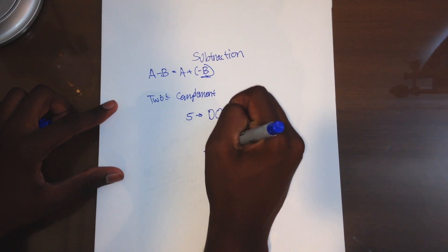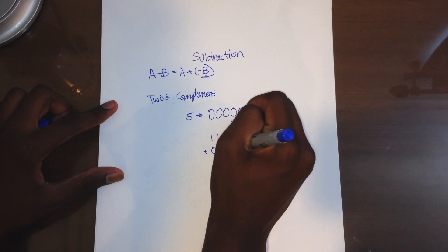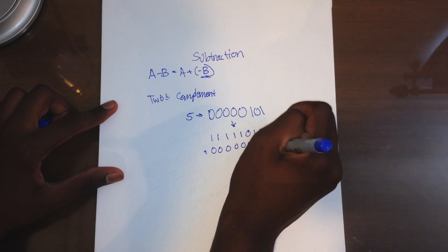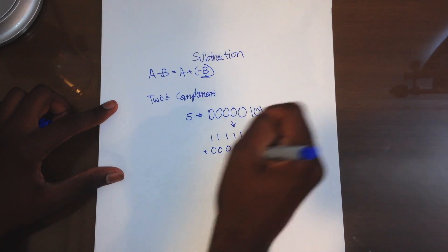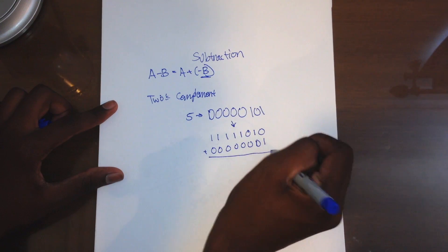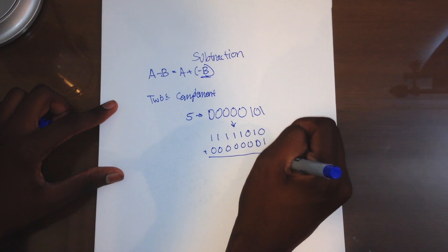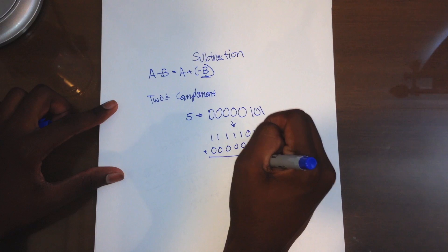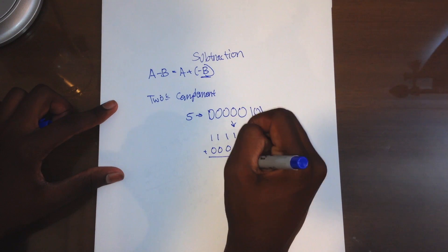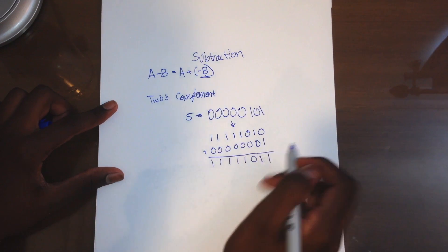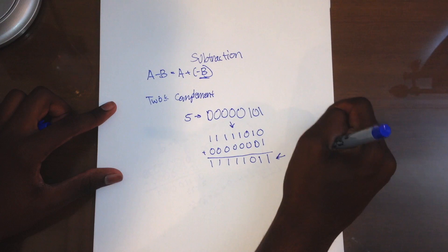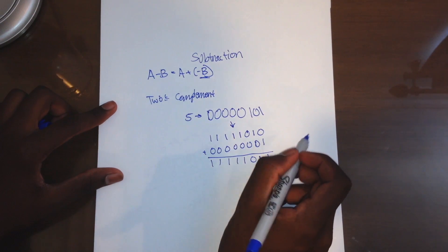Then you add 1. So the number now becomes 1, 1, 1, 1, 1, 0, 1, 1. Wait — after adding 1 to the inverted form, the result is 1, 1, 1, 1, 1, 0, 1, 1. So this is negative 5 in binary.